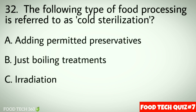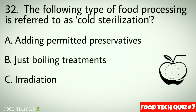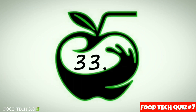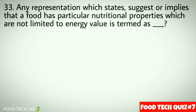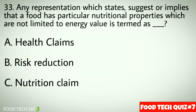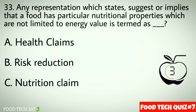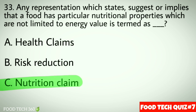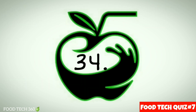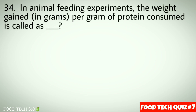Question number 32: The following type of food processing is referred to as cold sterilization — options: a) Adding permitted preservatives, b) Just boiling treatments, c) Radiation. Correct answer: c) Radiation. Question number 33: A representation which states, suggests, or implies that a food has particular nutritional properties, not limited to energy value, is termed as — options: a) Health claims, b) Risk reduction, c) Nutrition claim. Correct answer: c) Nutrition claim.